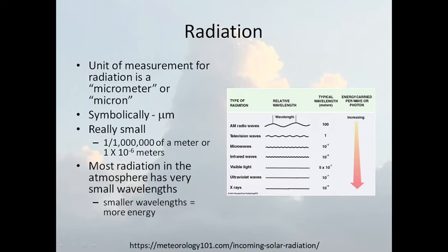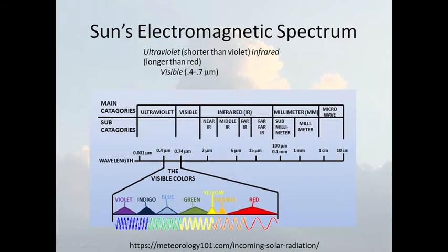The unit of measurement for radiation is the micrometer or micron — one one-millionth of a meter, or 10 to the negative 6 meters. That's how small the wavelength is. The smaller the wavelength, the more energy. The electromagnetic spectrum includes ultraviolet, visible, infrared, millimeter, and microwave. The visible wavelengths range from 0.4 to 0.74 micrometers — that's what we can see: red, orange, yellow, green, blue, and violet. That's the rainbow. Anything outside that range we typically cannot see.